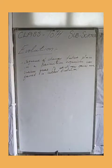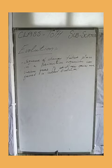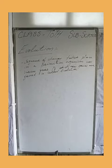So in evolution, we can state that it is through the process of evolution that the origin of life, or we can state that an enormous variety of plants and animals have come to exist on this earth at present. The plants and animals we see today in this present situation exist just because of evolution.